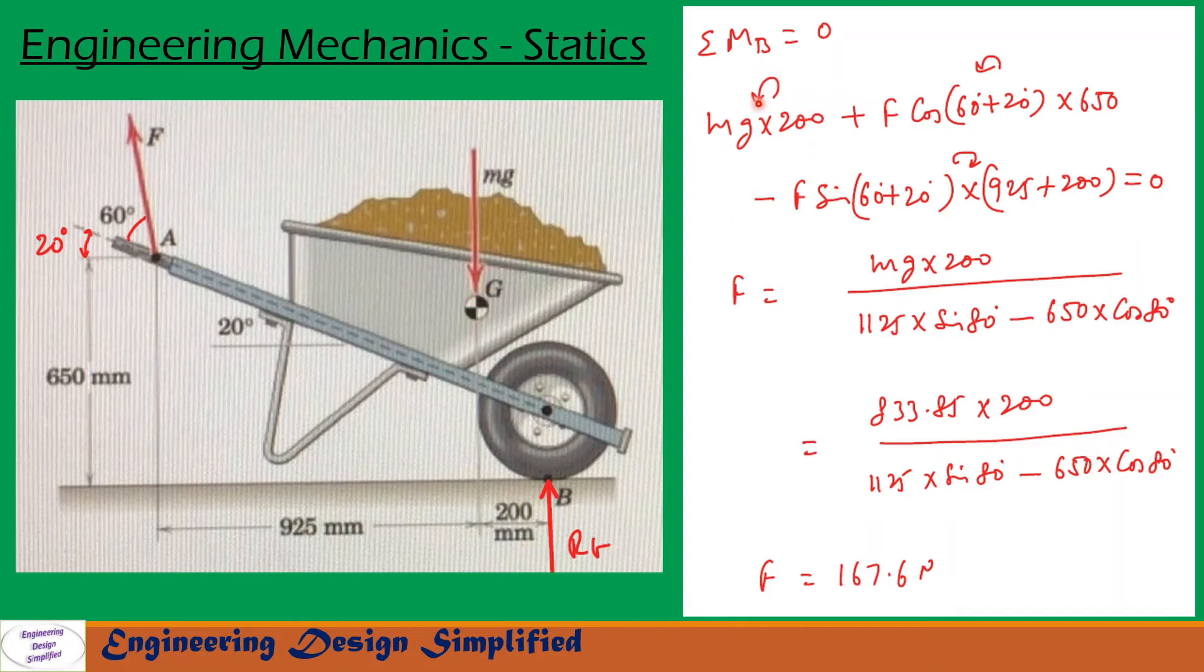This will be counterclockwise direction plus the horizontal component of F into this distance 650. So F cos(60 + 20). This angle is 20, so the horizontal component of F will be F cos(60 + 20) × this distance, its moment about B. This will also be in the counterclockwise direction. So that is written here F cos(60 + 20) × 650.